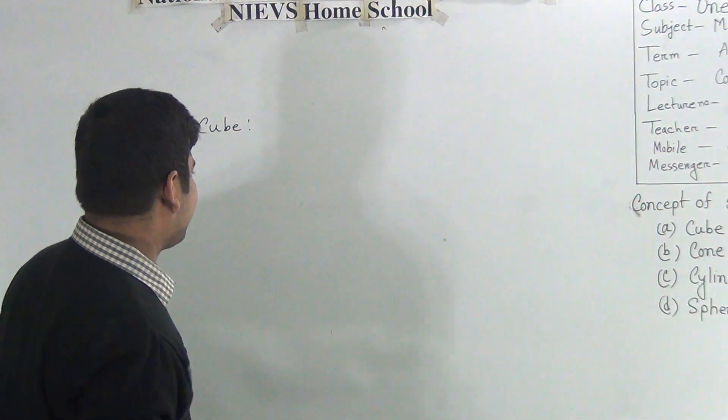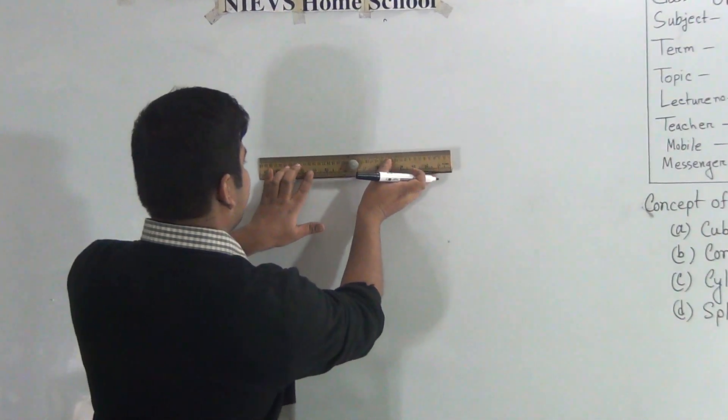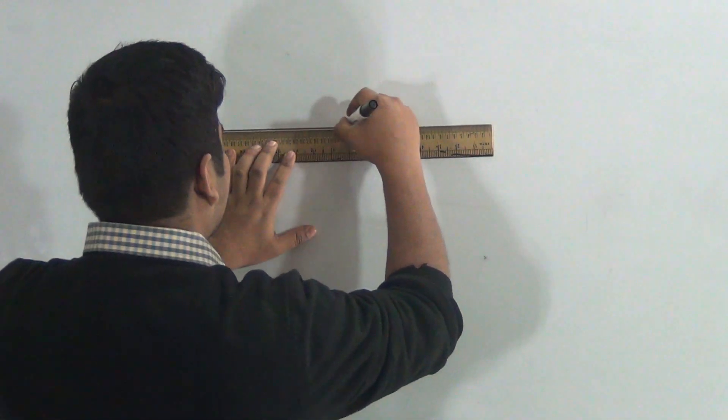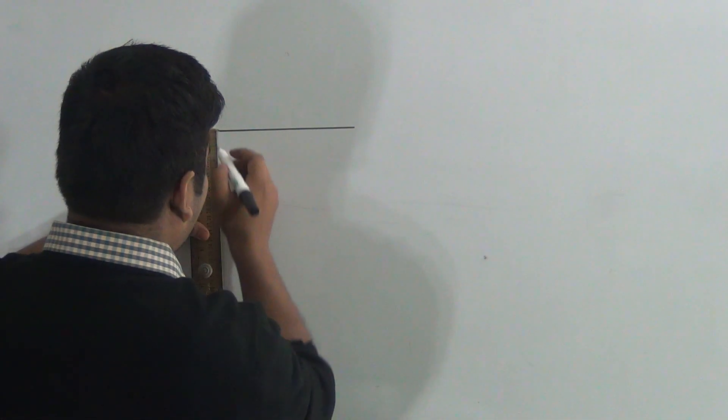So what is the figure? So at first we draw a square. A square means we draw a quadrilateral whose sides are equal.